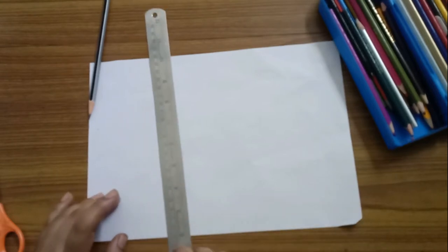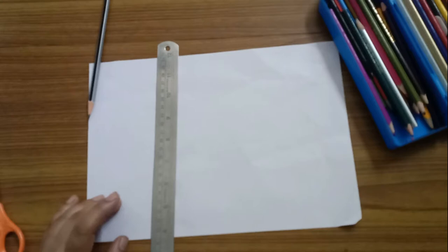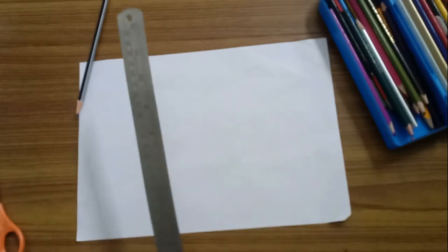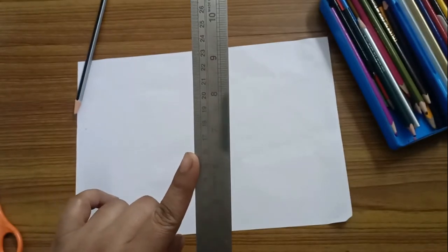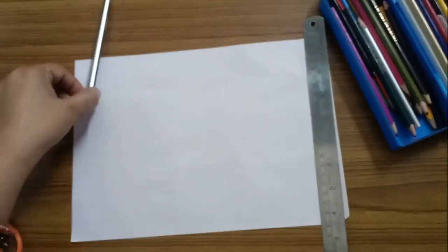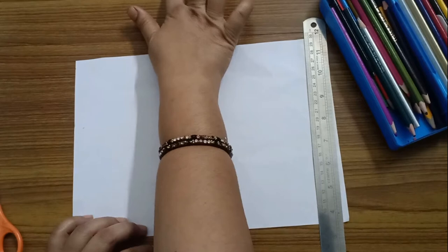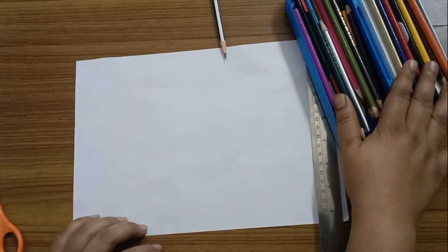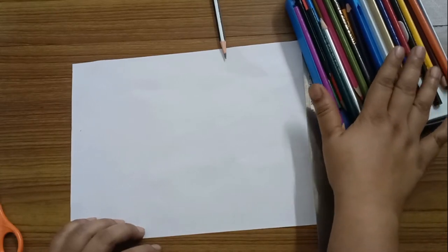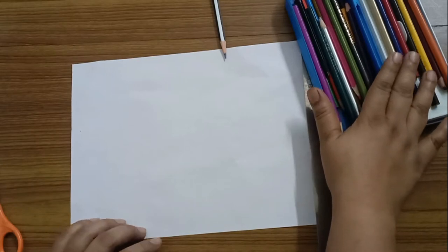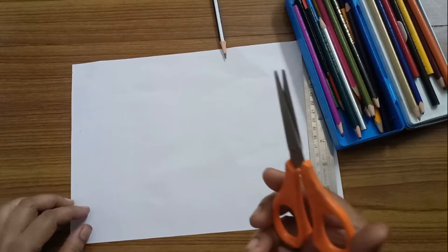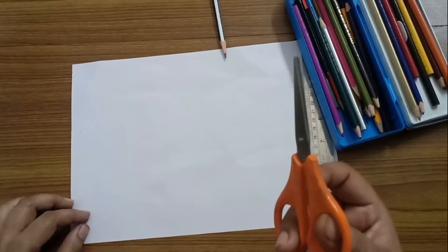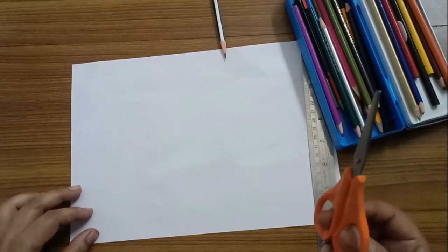So let's start. To make an agamograph, we need one A4 size paper white, a scale, maybe small or big whatever you have, pencil, eraser, pencil colors. I have a lot of pencil colors here. Crayon colors are also fine but we prefer pencil color because they don't smudge and a scissor. Please use scissor when you are supervised by any adult. Please don't use scissors on your own.